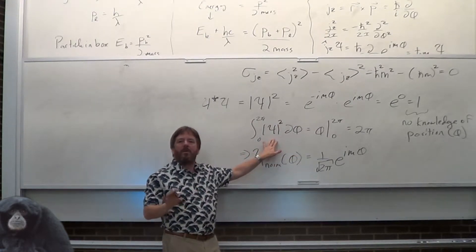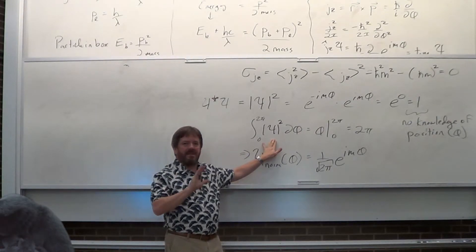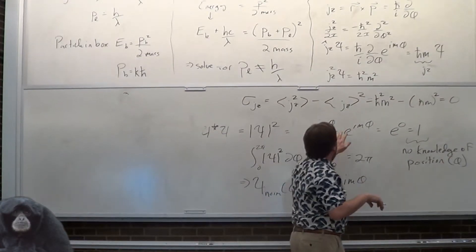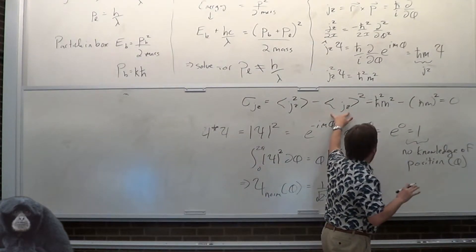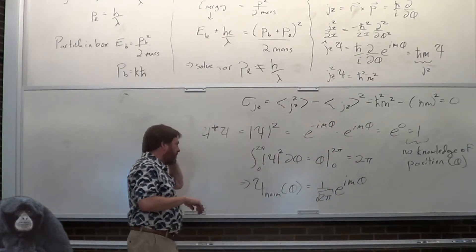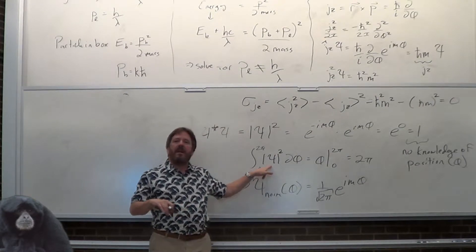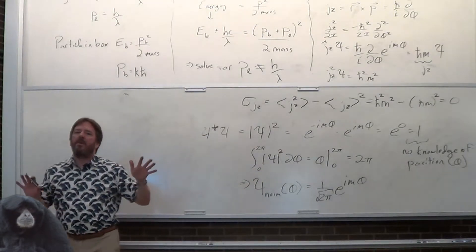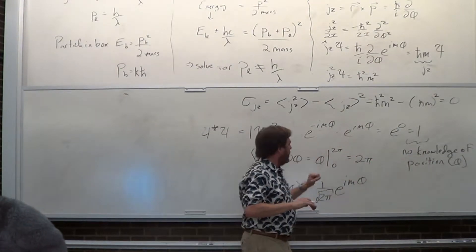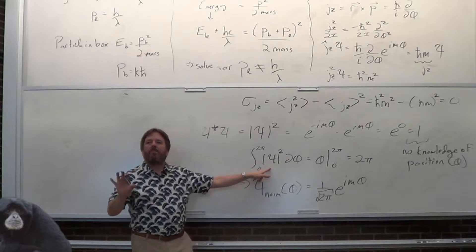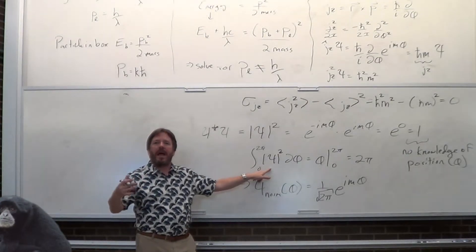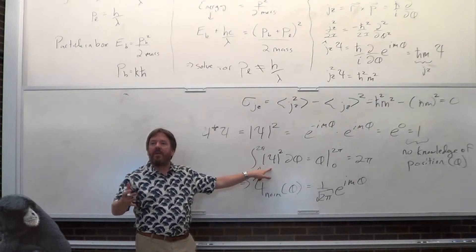Notice that if you do particle in a box, it doesn't work the same way. The particle in a box has a non-zero momentum and non-zero x — the standard deviations are non-zero. Notice that when you square the wave function for particle in a box, the x is still there.